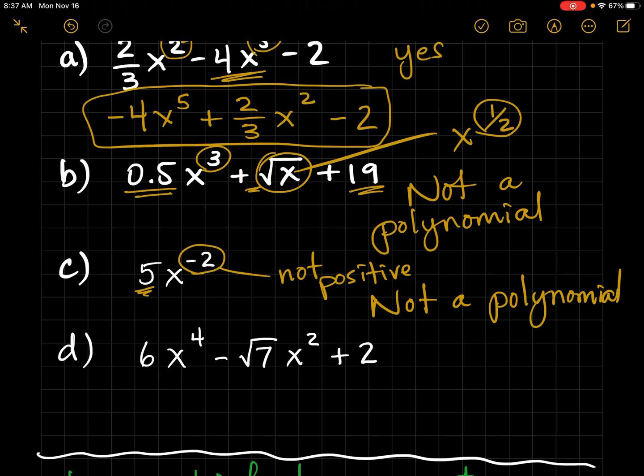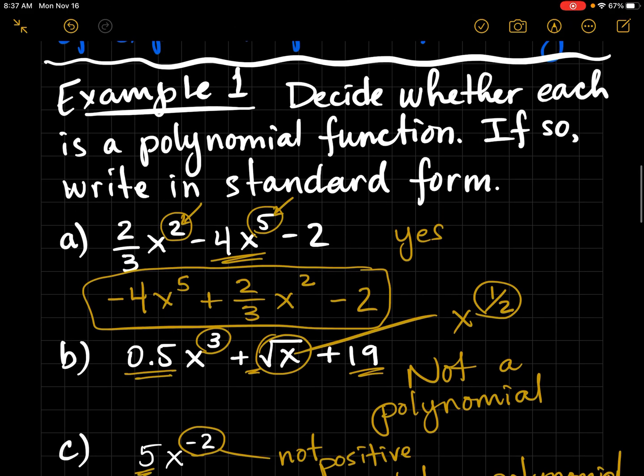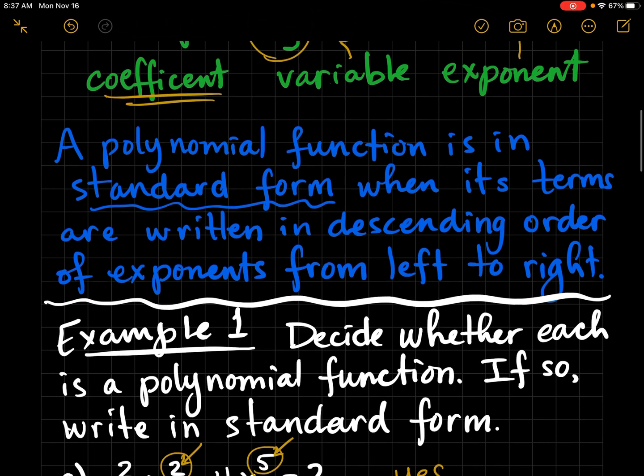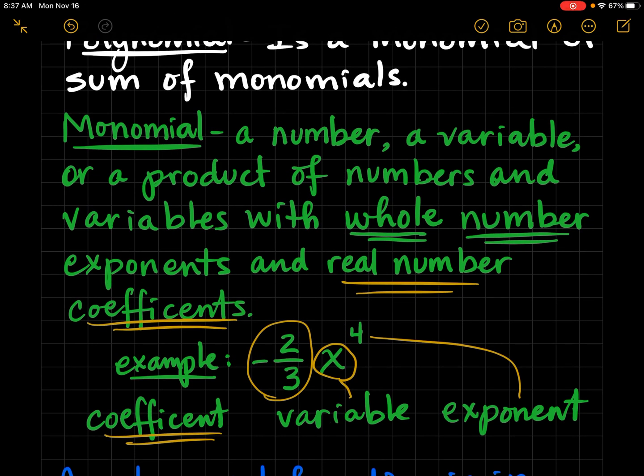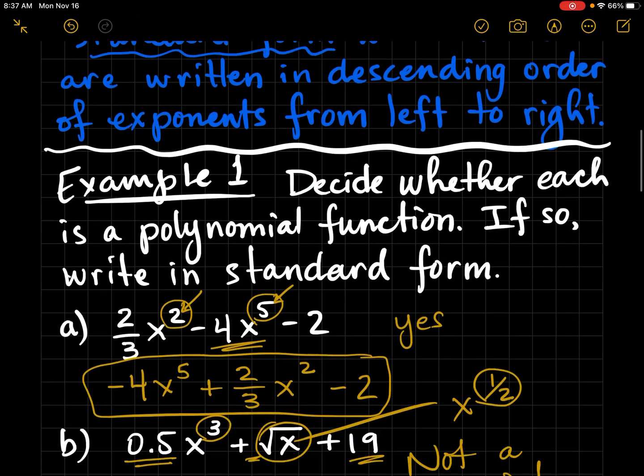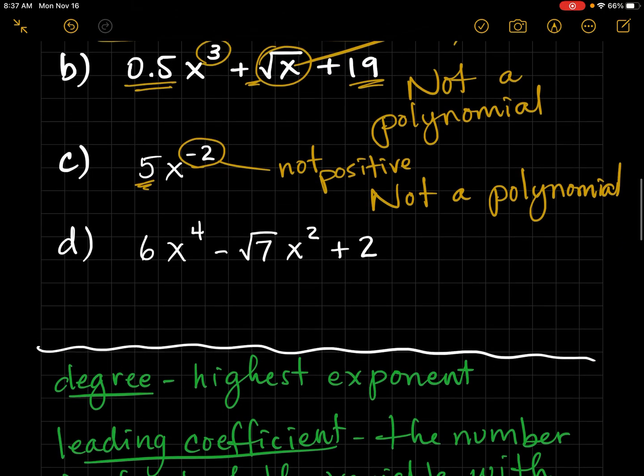I want to emphasize that the variables have to have whole number exponents. Let me add that in there, positive whole number exponents. Let's continue on with part D.